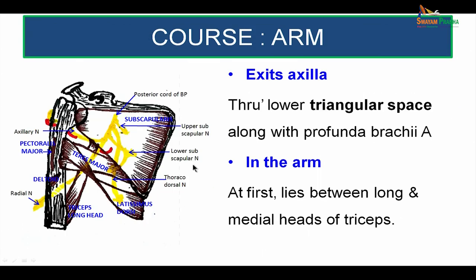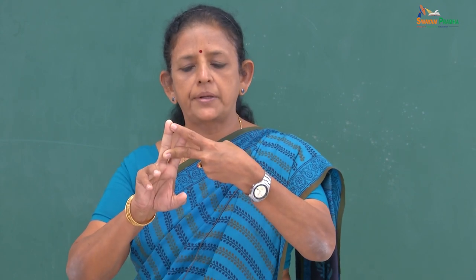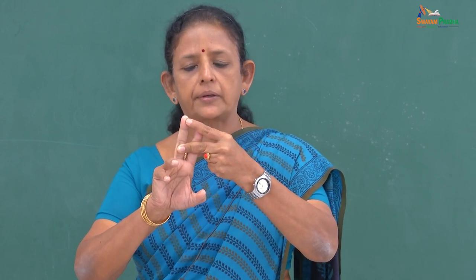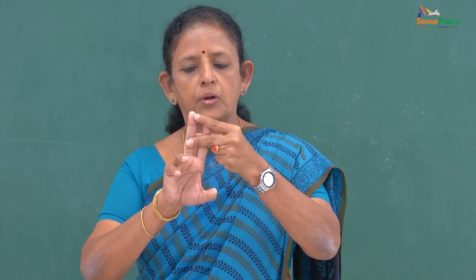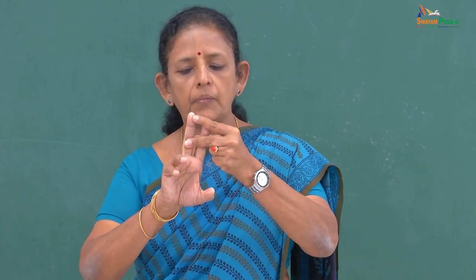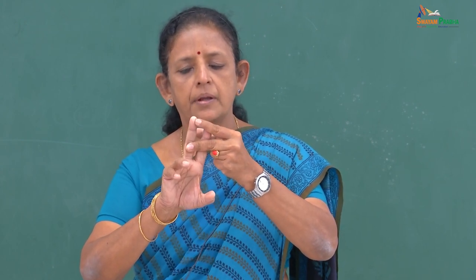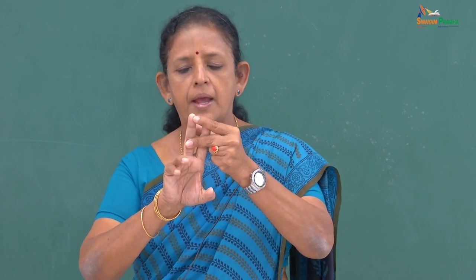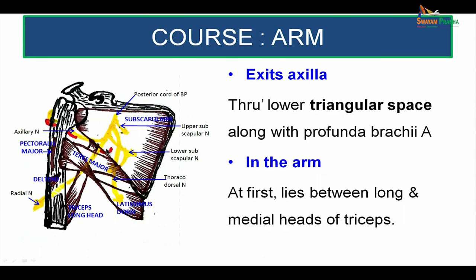When it leaves the axilla, it enters into the lower triangular space with the profunda brachial artery. The muscles of the scapula form potential spaces classified as quadrangular space, upper triangular space, and lower triangular space. The lower triangular space is bounded above by the teres major muscle, medially by the long head of triceps, and laterally by the shaft of the humerus. It is in this lower triangular space that the nerve emerges along with the profunda brachial artery, lying between the long and medial heads of the triceps.